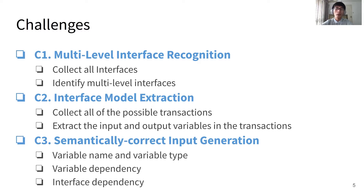Challenge 2: To improve the fuzzing effectiveness, the input data should follow the grammatical requirements of target interfaces. So we should extract the interface model — that is, we need to collect all possible transactions and extract the input and output variables in those transactions. Challenge 3: When fuzzing Android native system services, we should generate semantically correct input. There are many types of semantic requirements, including variable name, variable type, variable dependency, and interface dependency.